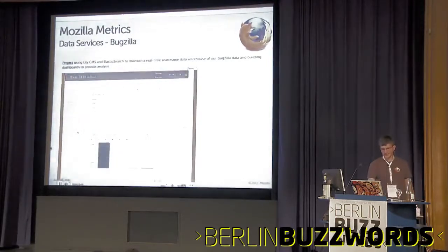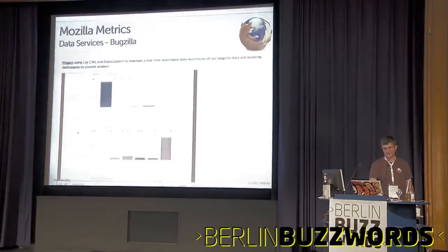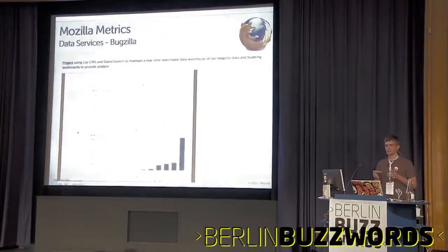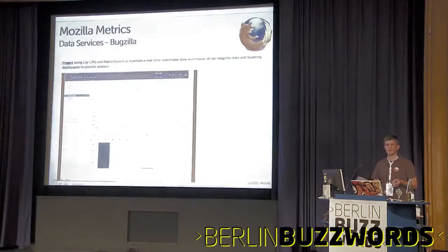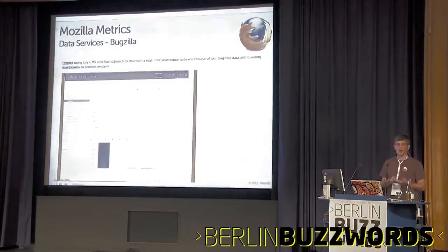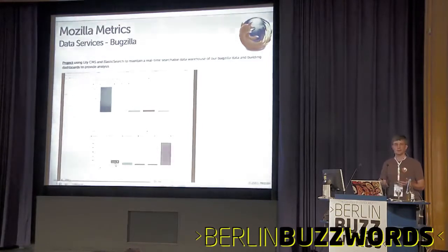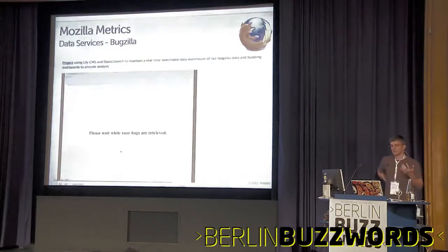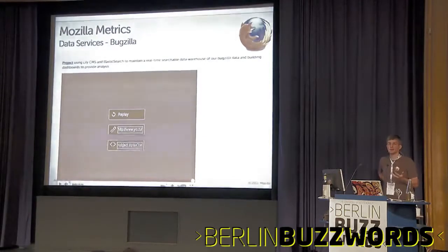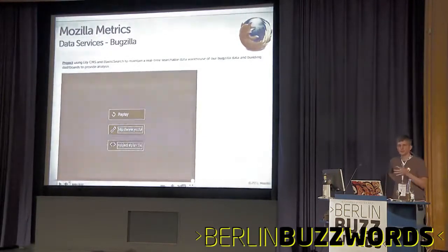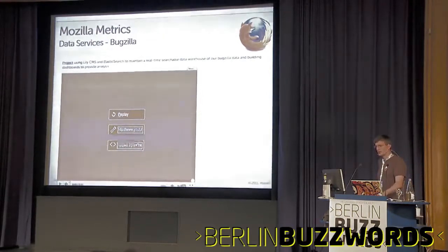The next one is Bugzilla. Mozilla does a lot with Bugzilla — not only for product development, but also for project and team management. New hires get bugs assigned to create their accounts, issue their hardware, and set up their desks. IT requests all flow through Bugzilla. Even our legal team issues — contracts that need evaluation and agreements — are created in Bugzilla. Because of this extensive use, all these teams want to analyze this data and perform trending analysis.